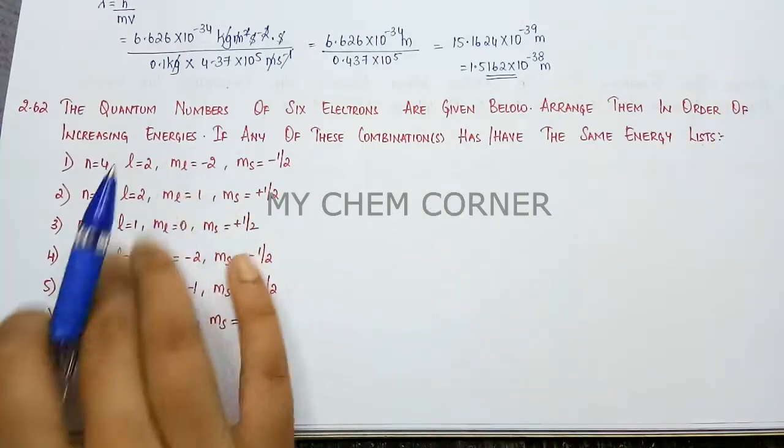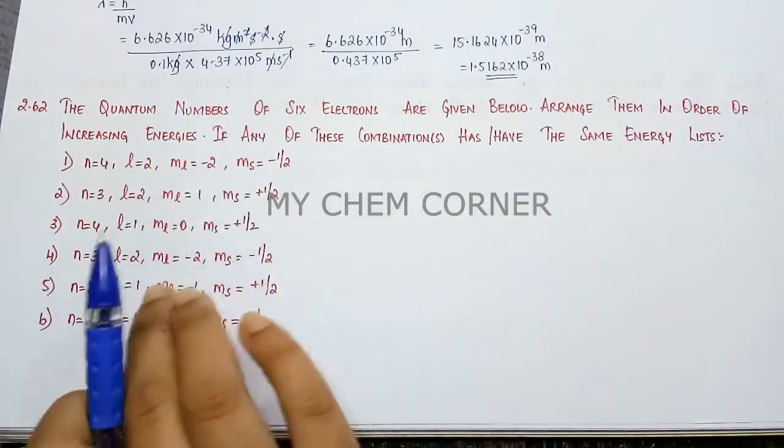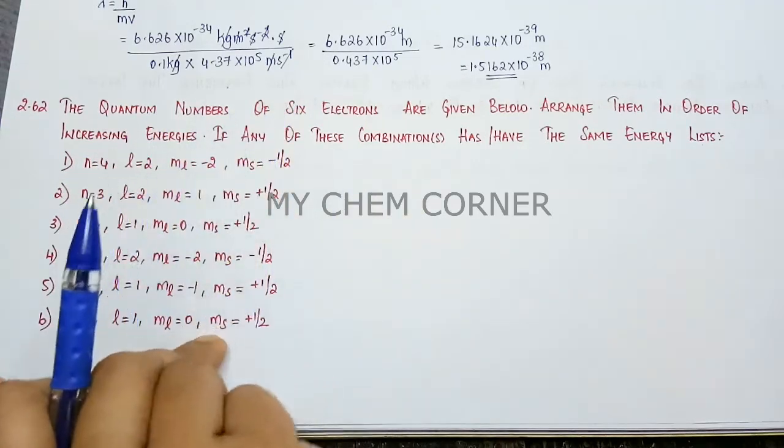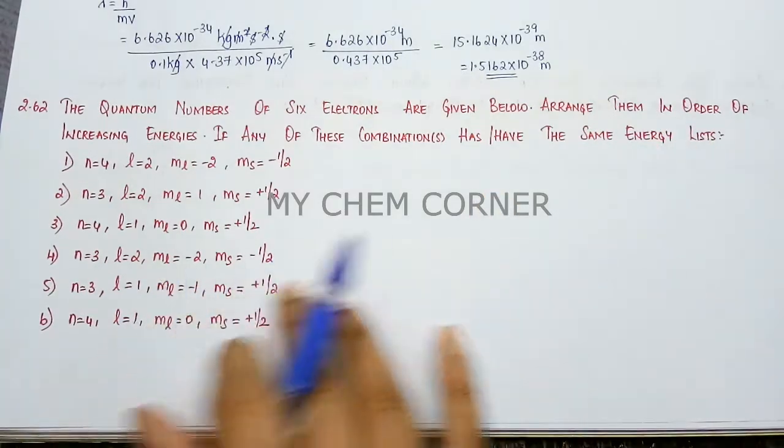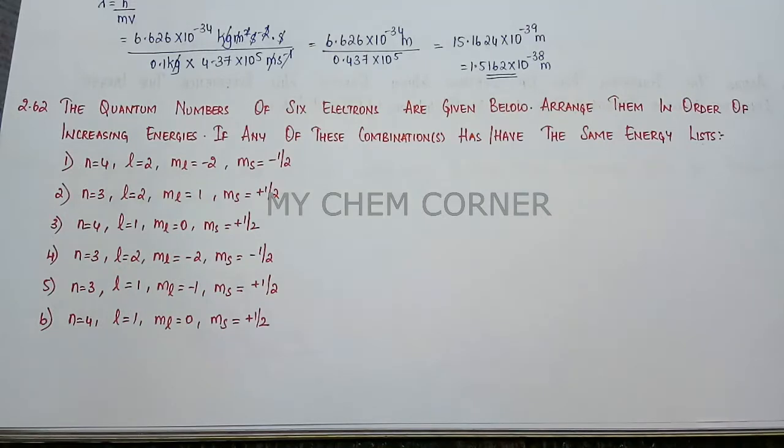For that, first we have to identify the orbital. We can't just look at this and say this is going to have the same energy. We need to first identify the orbital, then accordingly, as per the Aufbau principle, we are going to arrange them based on their energy.